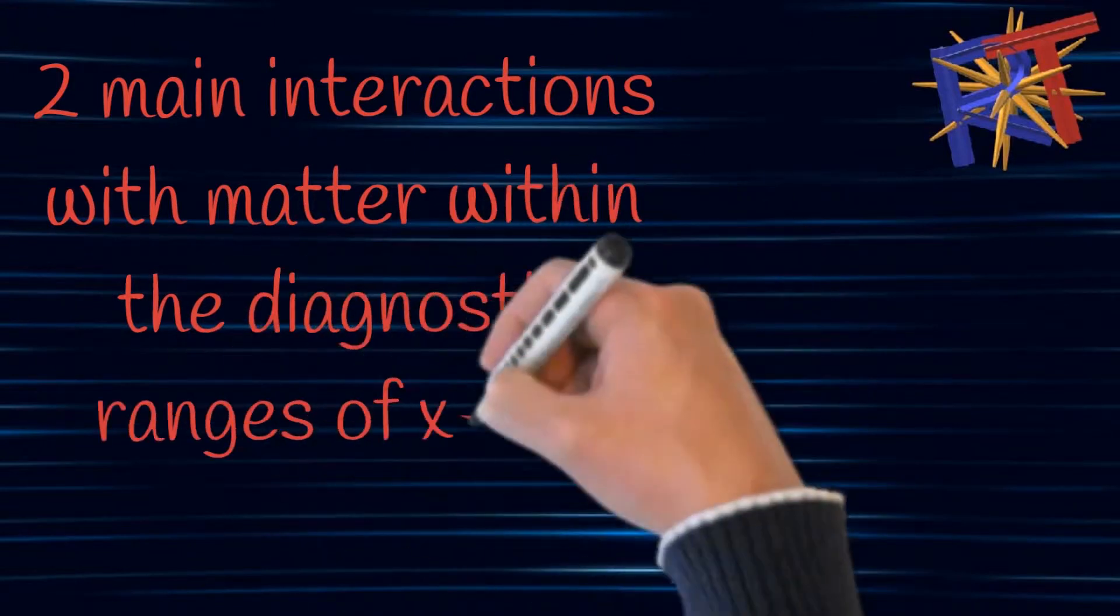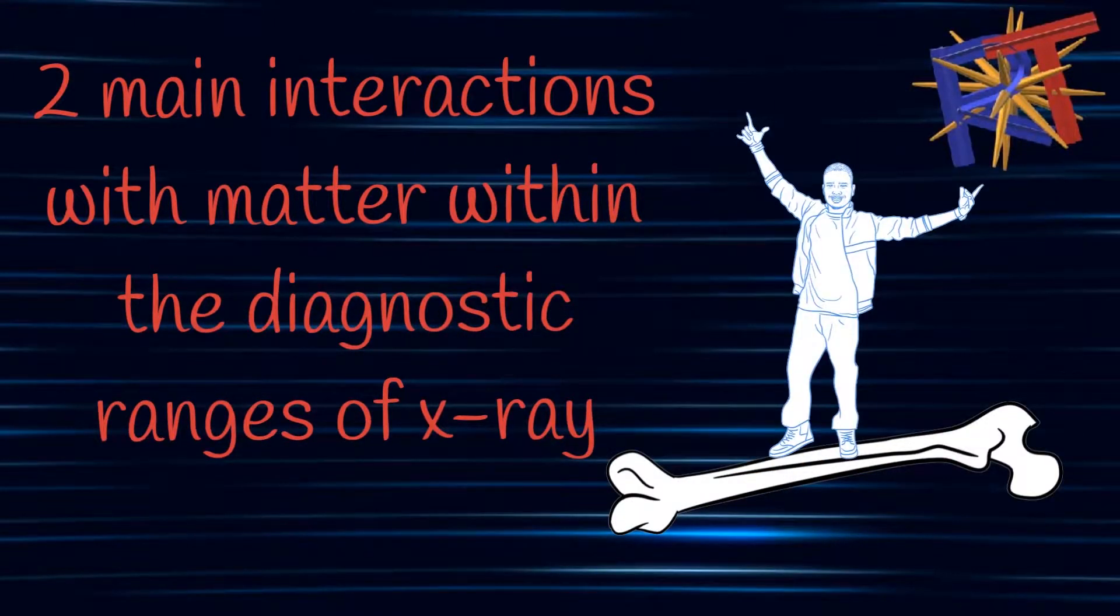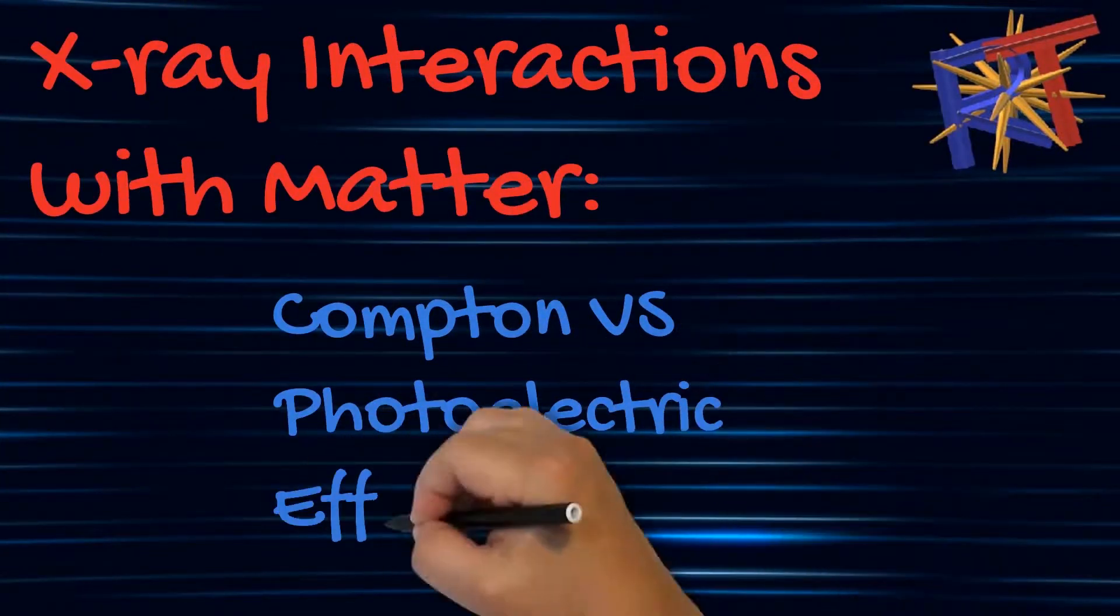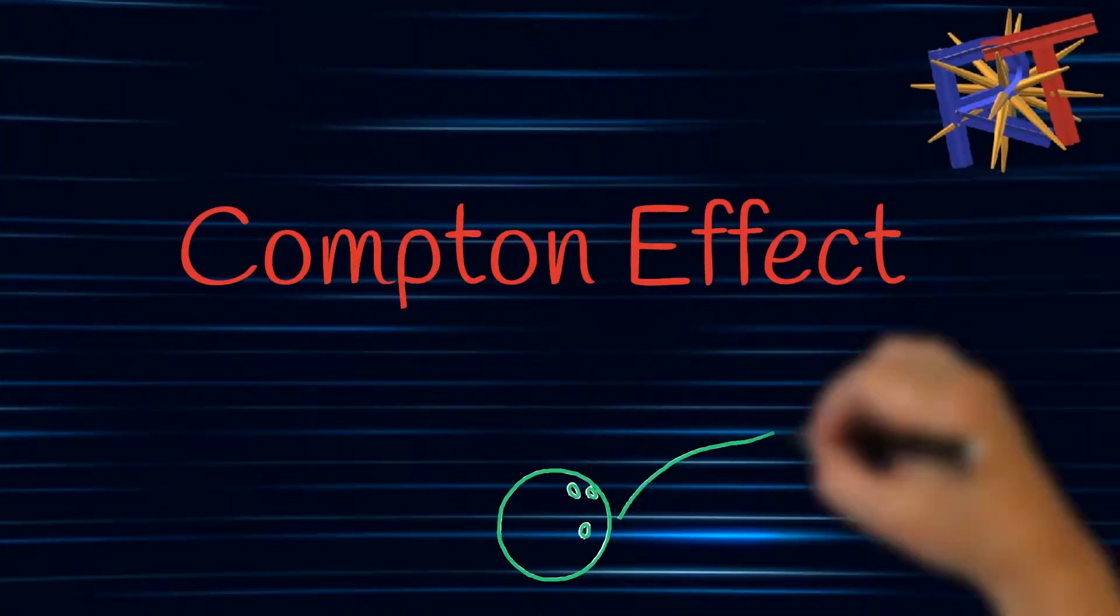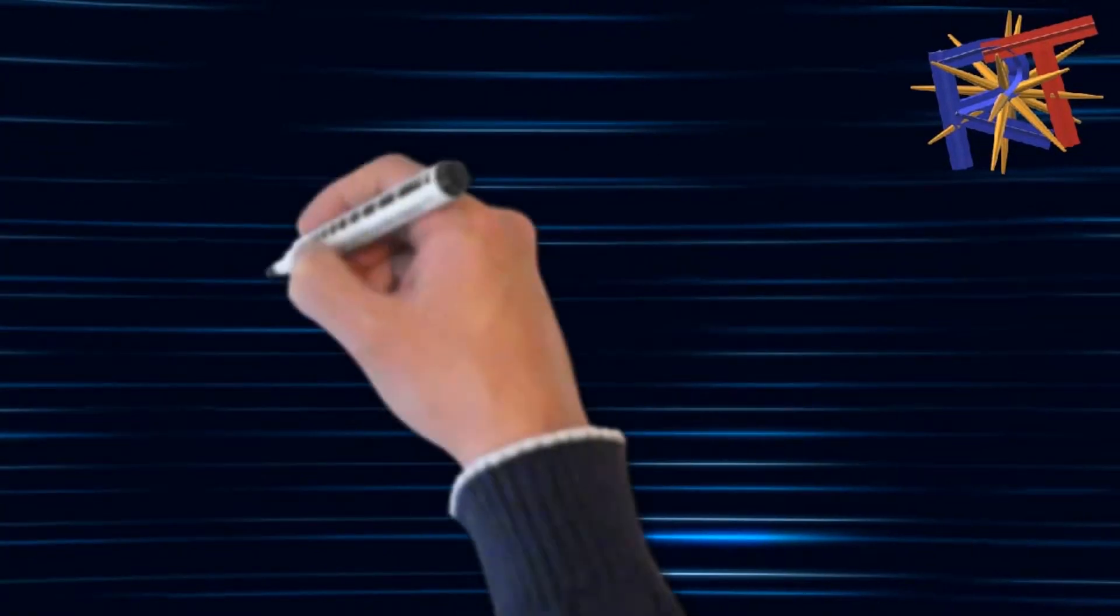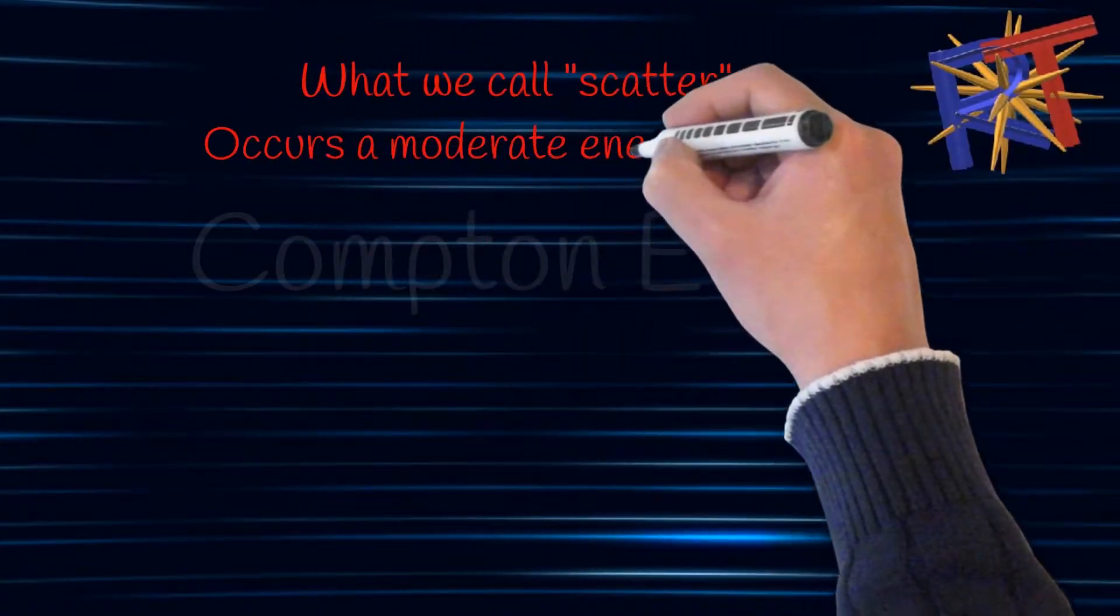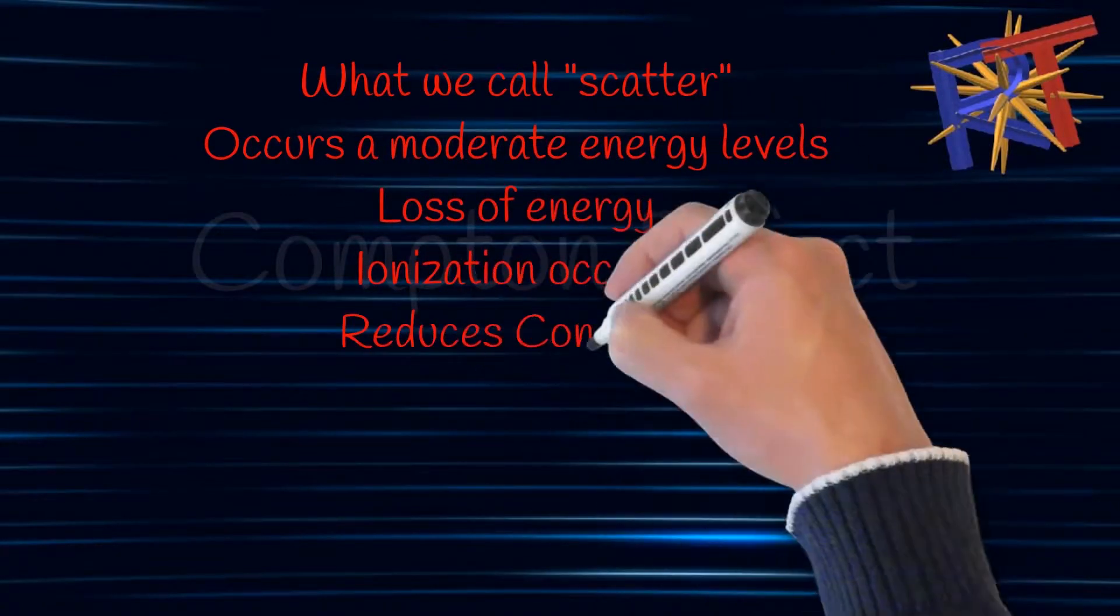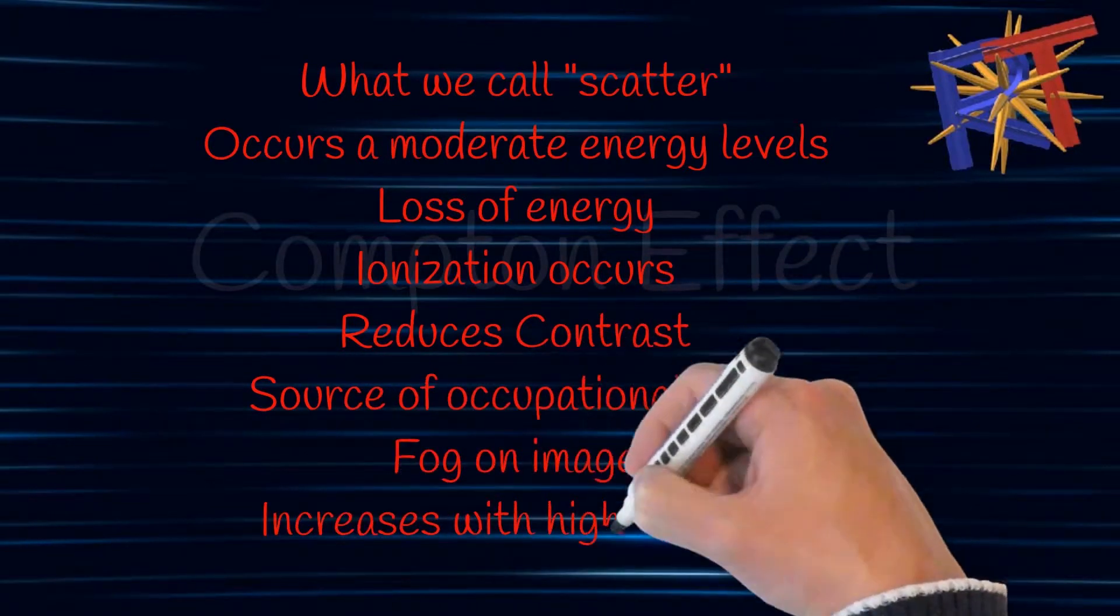There are two main interactions with matter within the diagnostic ranges of x-ray: one of them is Compton effect and the other is photoelectric effect. First we'll be discussing Compton effect. Compton effect is what we call scatter. It occurs at moderate energy levels. It includes loss of energy, ionization, and it reduces contrast and adds fog to the film.